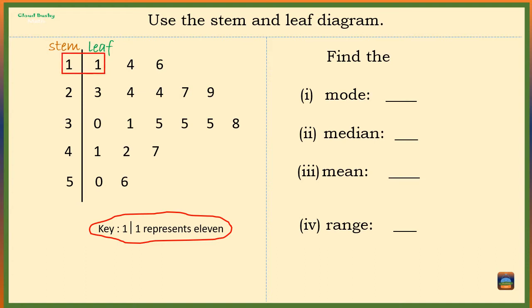That means these are tens and this side are units. This number must be 16, this is 29, 35, 50, and 56.